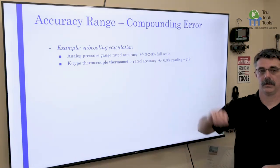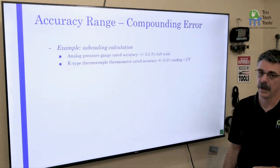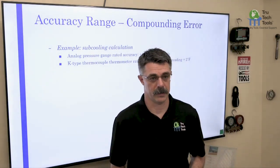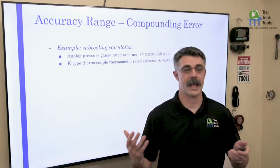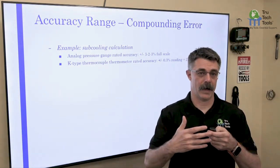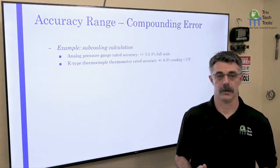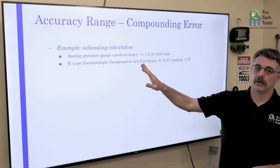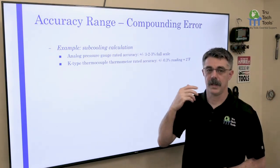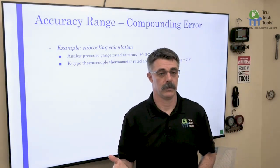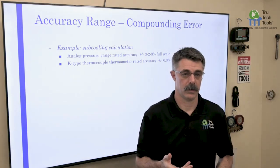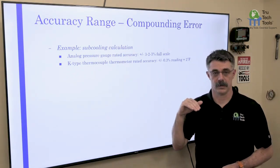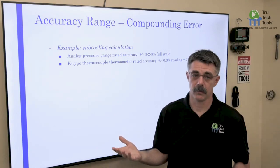Let's talk about subcooling calculation — something near and dear to all of us in this industry. Subcooling is a calculated value, not a measured value. We take two different readings and feed them into one to make a calculation. With subcooling, this becomes challenging because we have two different instruments and a compounding inaccuracy — errors that stack on top of each other and depending on how they work, can really throw things off.